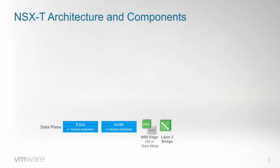What are the NSX-T components and architecture? In the data plane, NSX-T uses kernel modules in both ESXi and KVM, so it provides in-kernel services across all hypervisors. There are also edge nodes, which could be VM or bare metal form factor and that connect the NSX environment with the physical environment at layer 3. There is also a layer 2 bridge component that allows extending the same IP subnet between the physical network and the NSX networks.